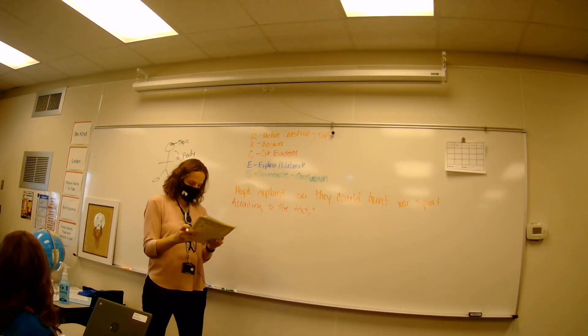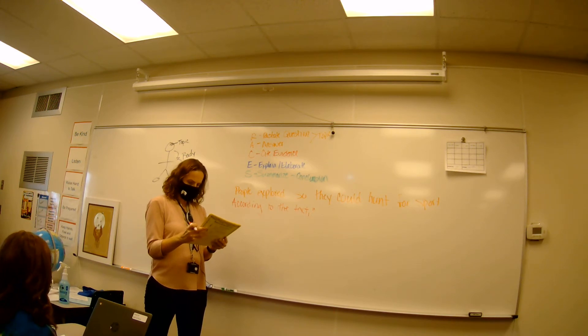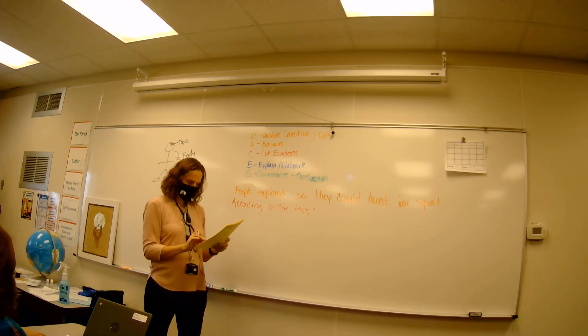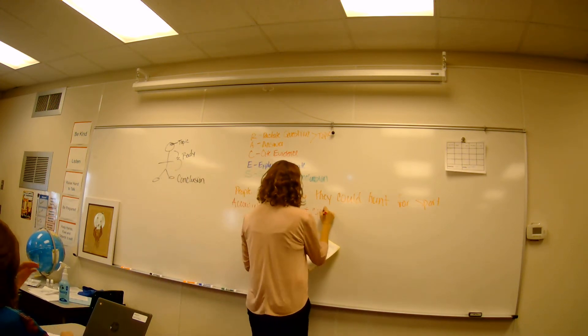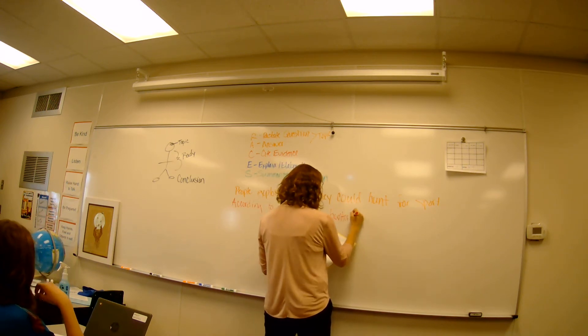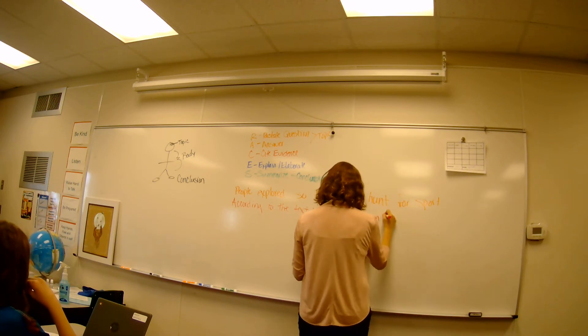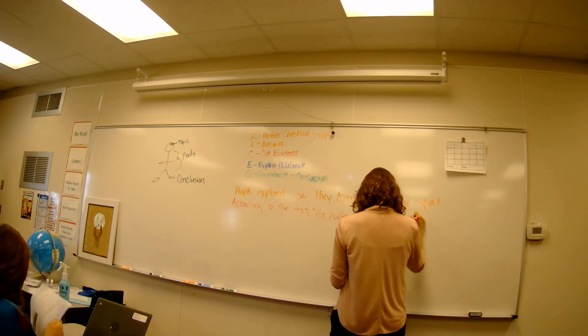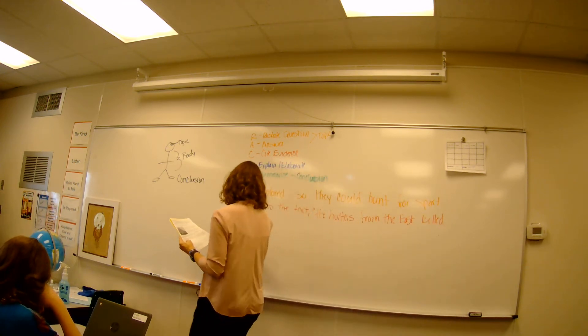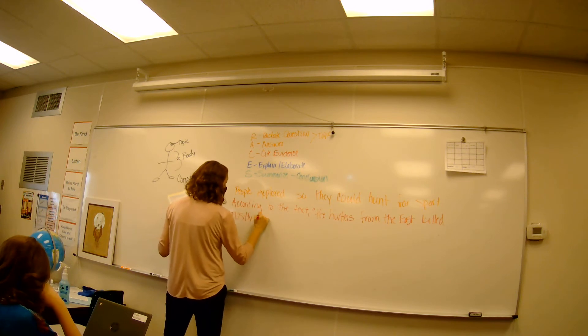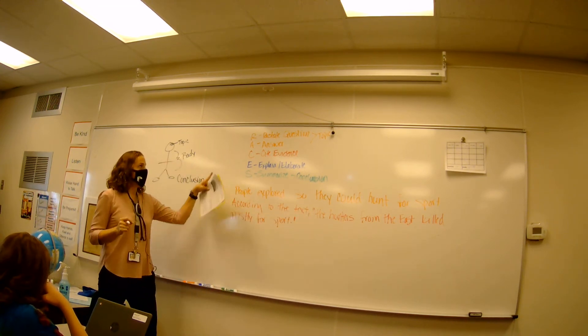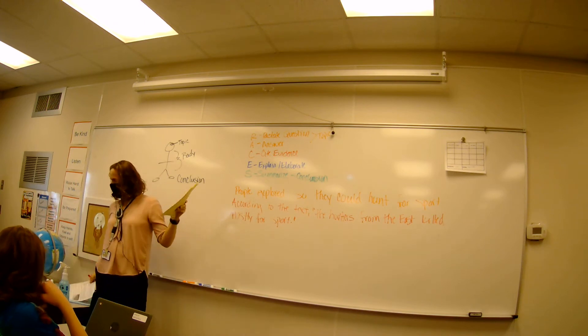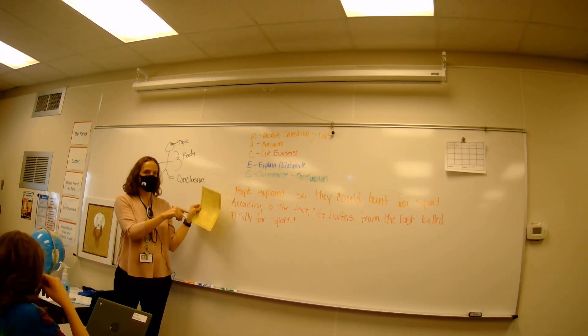And then where was it? The hunters took me a second. Sorry. The hunters from the east killed mostly for sport. That's my quote. Got my quotation marks in there. I've got it in red. It's a direct quote. I used my cheat from the paper that says, according to the text, right? And I've got it in there. So now what do I have to do? I've restated and answered. I've cited my evidence. Now, what do I have to do?